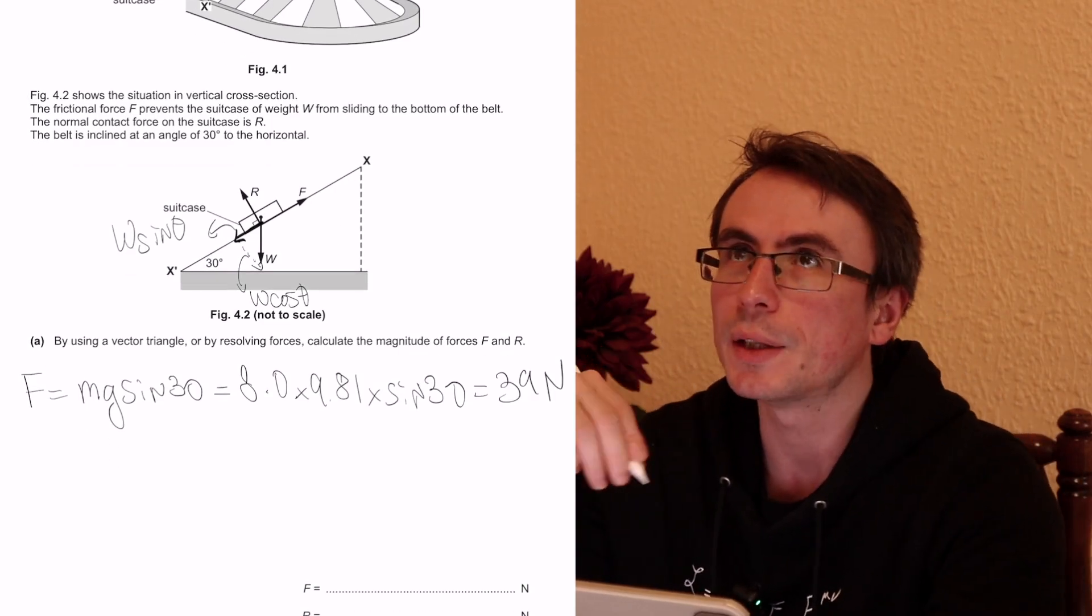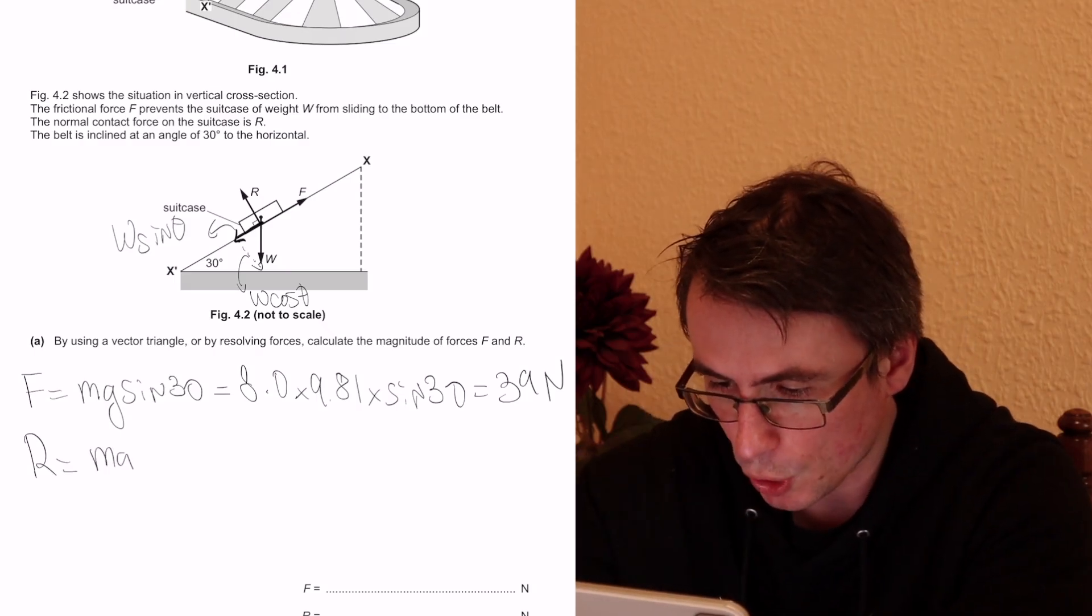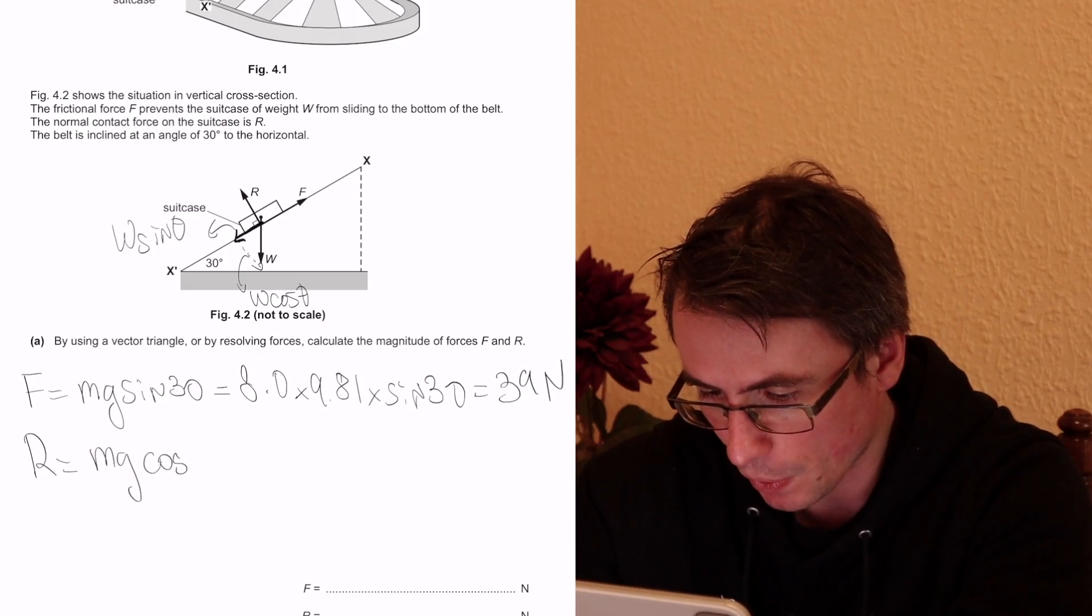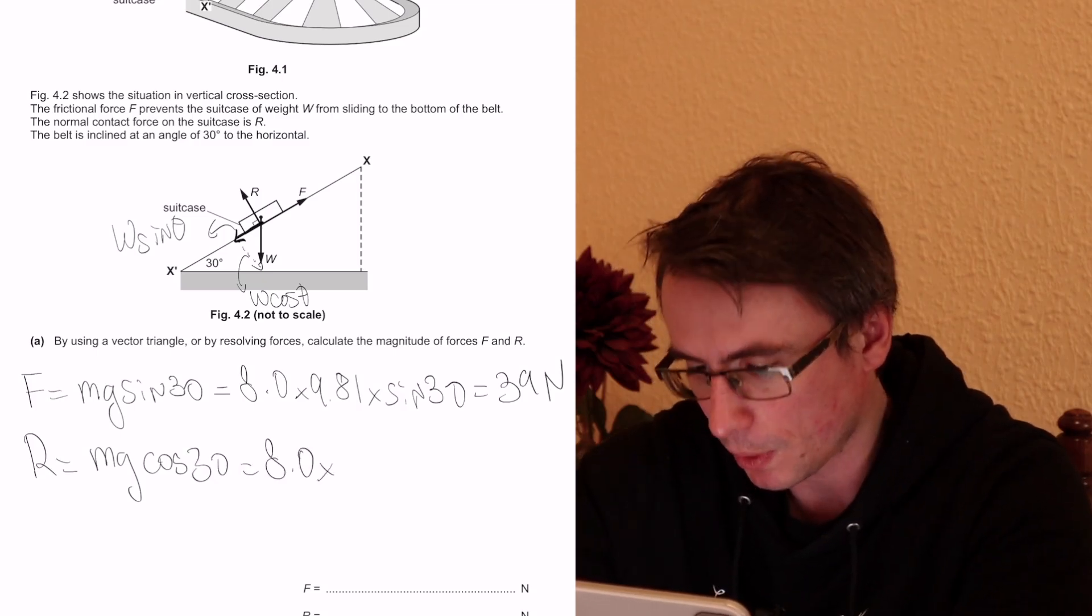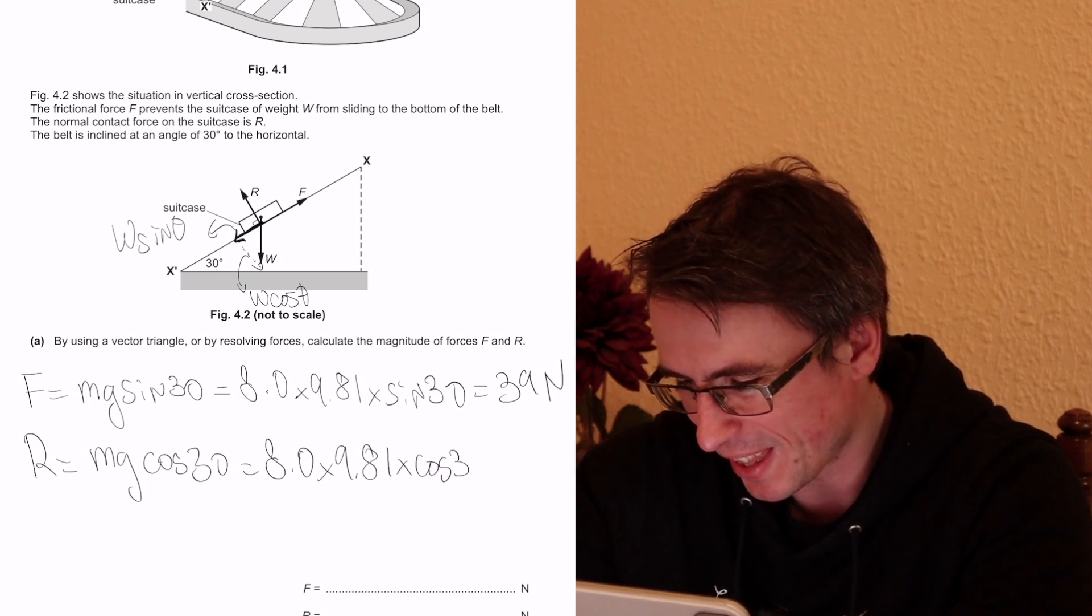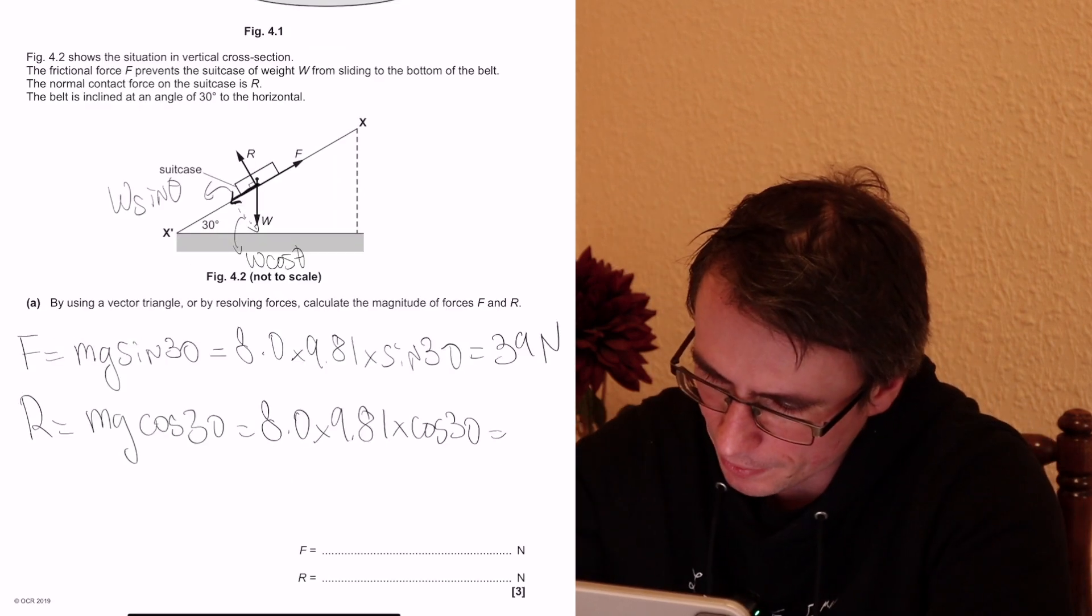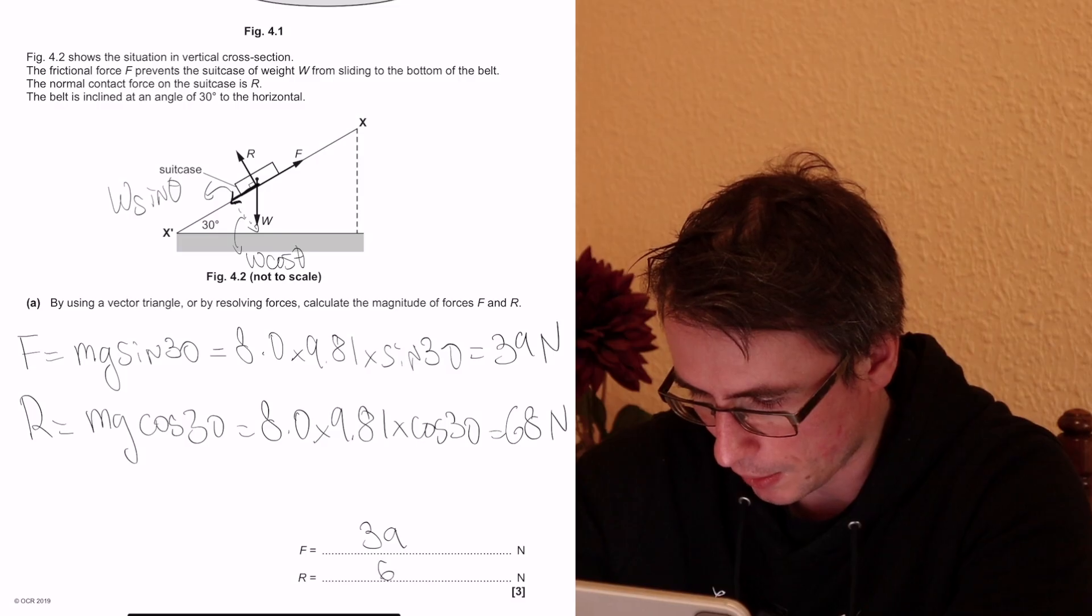On the other hand, the normal reaction R will be given by mg cos of 30 degrees, which is going to be equal to 8.0 times 9.81 multiplied by the cosine of 30. And this here is going to give us around 68 newtons, so 39 and then 68.